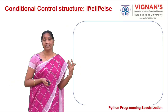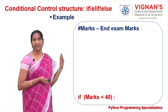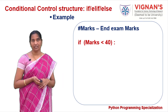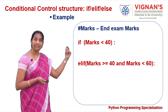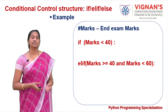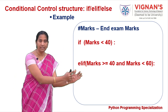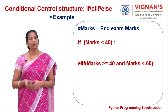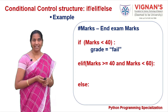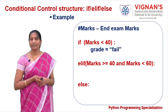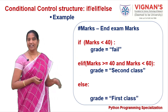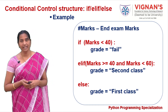Here's an example using if-elif-else with student marks. If marks are less than 40, the grade is 'fail'. Elif marks are greater than or equal to 40 and less than 60, the grade is 'second class'. Otherwise, if marks are 60 or above, the grade is 'first class'. Students are binned into one of three groups, and at any point in time only one grade is assigned.